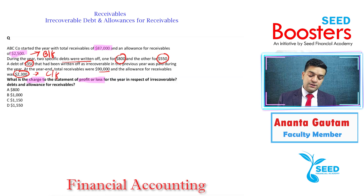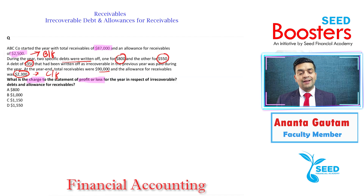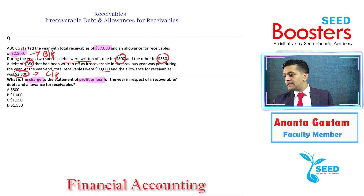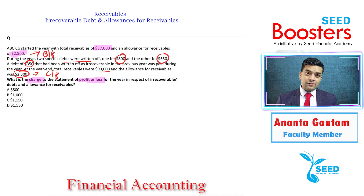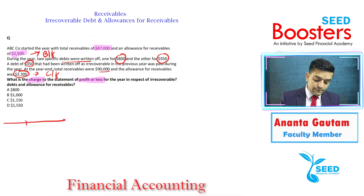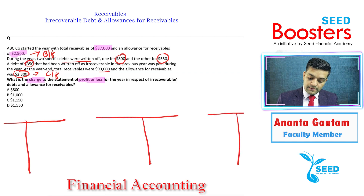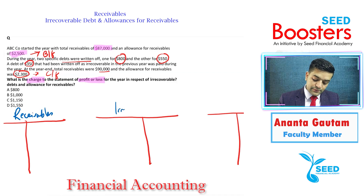The approach to answering irrecoverable debt or receivables section questions is to use three T-accounts — three ledger accounts: one for receivables, one for irrecoverable debts, and one for allowance for receivables.